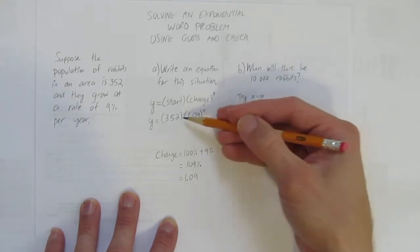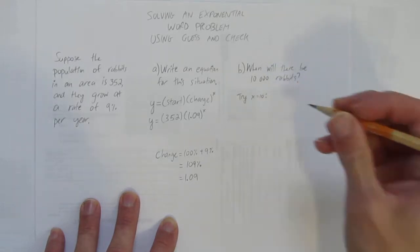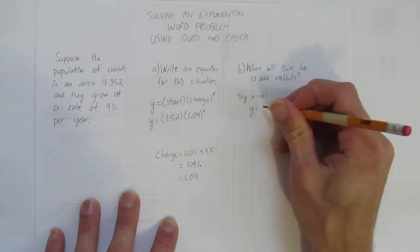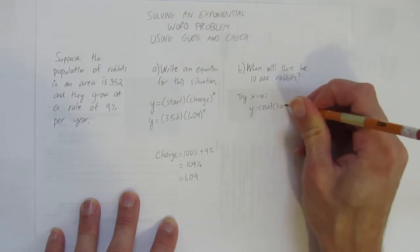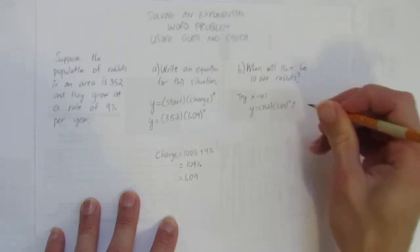If I sub in a 1 here, it's not going to go up by very much. So let's try X equals 10. And I get Y equals 352 times 1.09 to the power of 10, which equals approximately, I don't know,